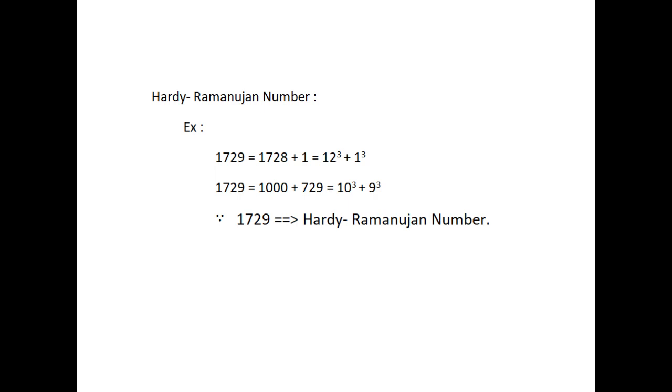Similarly, 1729 can be written as 1000 plus 729 which is equal to 10 cube plus 9 cube. Since 1729 can be expressed in two different ways, it is a Hardy-Ramanujan number.